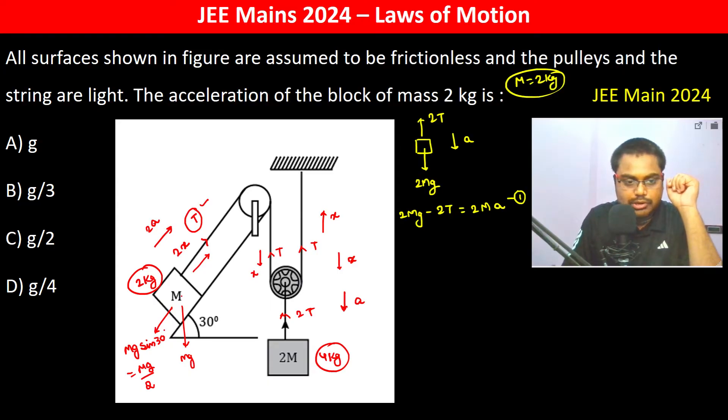Now for the inclined plane one, we have T minus mg by 2 is equal to m into 2a. This is second equation. So now we have to remove T and find out a.